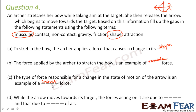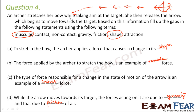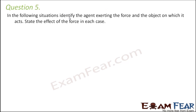'While the arrow moves towards its target, the forces acting on it are due to dash and due to dash of air.' When the arrow is released, it experiences a force due to gravity, since the earth is always exerting an attractive force on all objects. The other force is due to friction of air, because as the arrow moves through air, the air applies a force opposing its motion. After some time the arrow falls to the ground due to this frictional force.